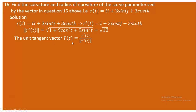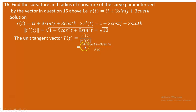The unit tangent vector T(t) equals r'(t) divided by the norm of r'(t). We have r'(t) = i + 3cos(t)·j - 3sin(t)·k as the numerator, and √10 as the denominator. So T(t) = (1/√10)·i + (3/√10)·cos(t)·j - (3/√10)·sin(t)·k.